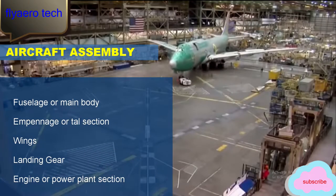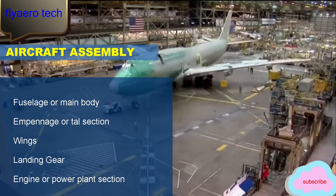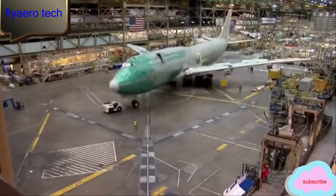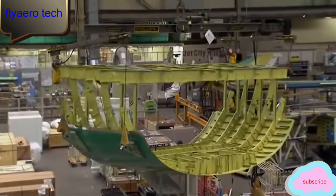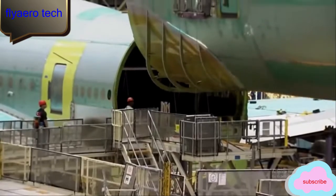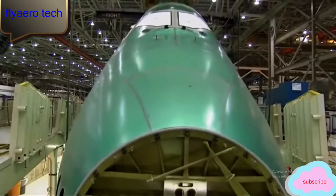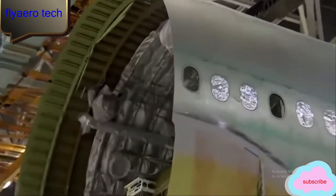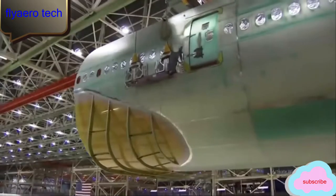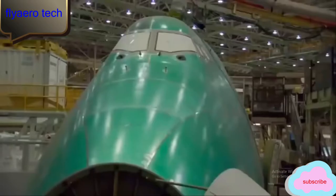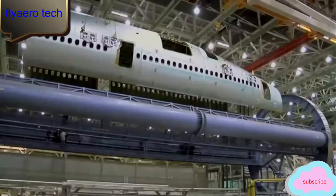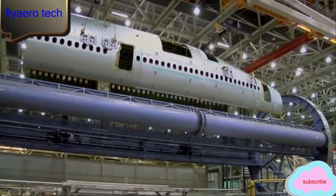Today I am going to talk about aircraft assembly and major sub-assemblies of the airplane. Aircraft assembly involves the joining of various components and structures that form an aircraft. Major sub-assemblies are the fuselage or main body, empennage or tail section, wings, landing gear, and engine or power plant section.